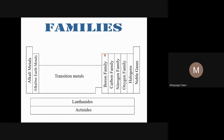The first member of group 13 is boron, group 14 is carbon, group 15 is nitrogen, group 16 is oxygen, group 17 is fluorine, and group 18 is helium (with neon as the corresponding second-period noble gas). Based on the first members, we name the groups as families: boron family, carbon family, nitrogen family, oxygen family, fluorine family, and helium family.